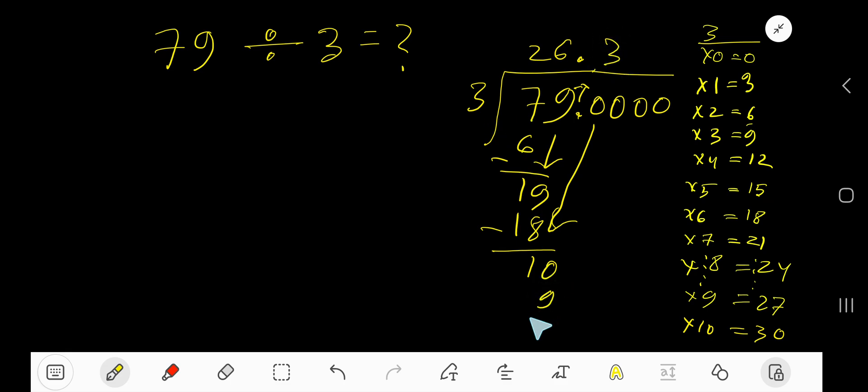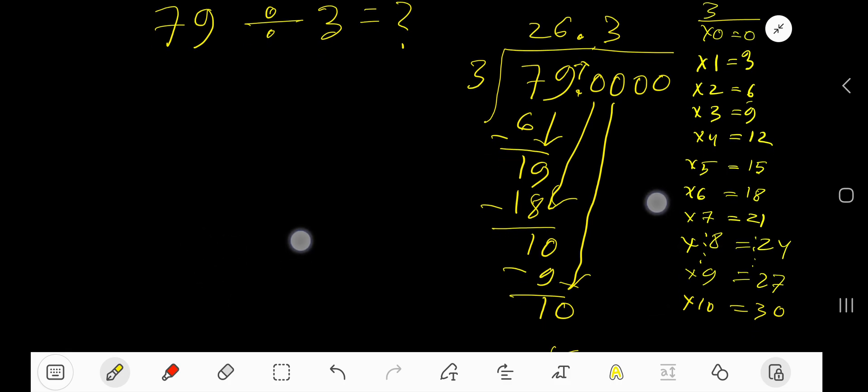3 times 3 is 9. Subtract to get 1. You can bring down more zeros. So 3 goes into 10 again, 3 times. 3 times 3 is 9. Subtract.